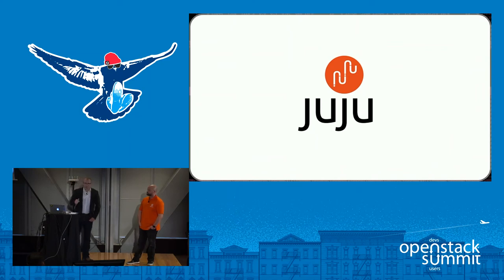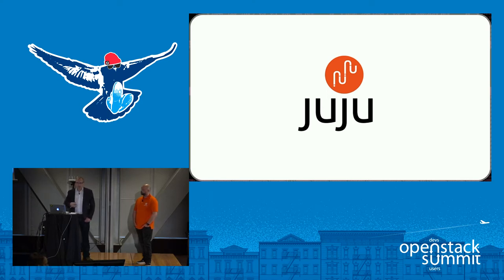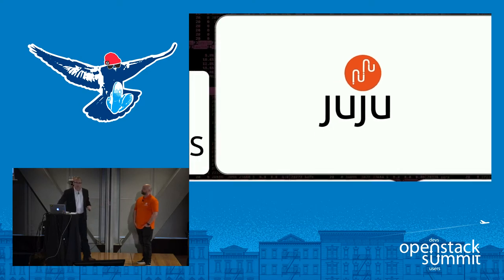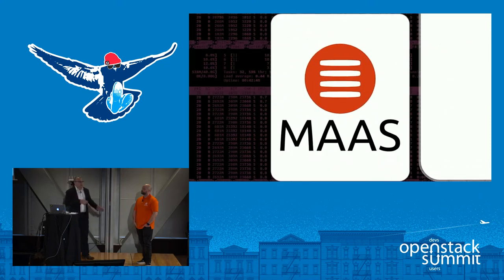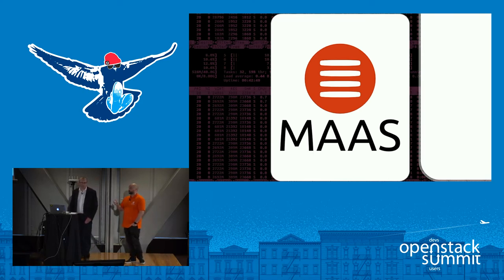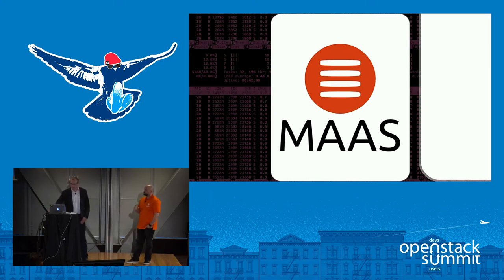What is Juju? It is an application modeling language that allows us to encapsulate the operational and deployment and administrative wisdom of network engineers and system administrators, representing these applications in a nice package shrink-wrapped into a thing called a charm. These charms are things you can take into various substrates and redeploy and manage applications on those substrates. One way you can do this with bare metal is to use MaaS — Metal as a Service — which lets you cloudify your data center and bare metal, manipulating it with an API as if it were a cloud.